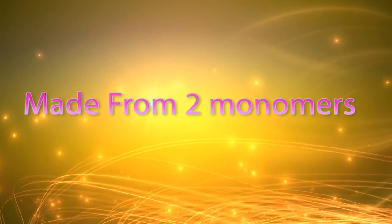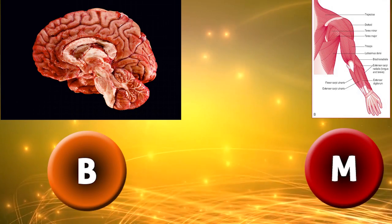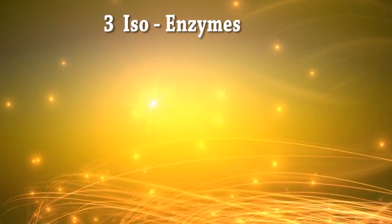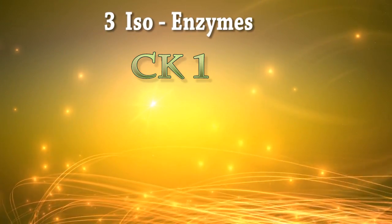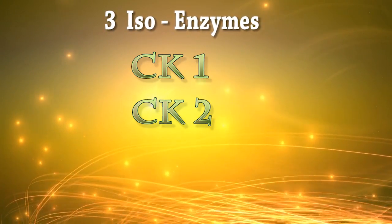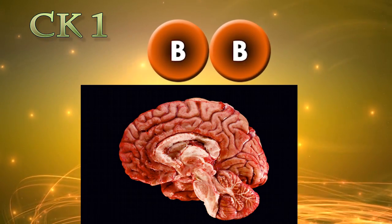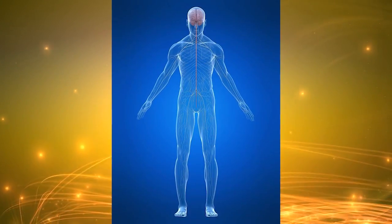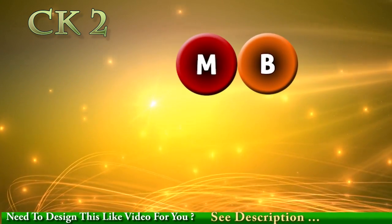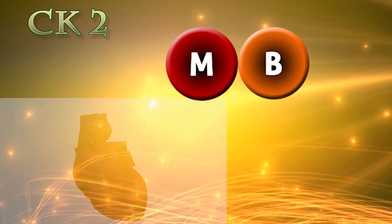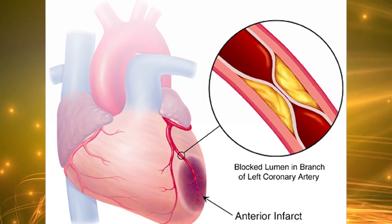Creatine kinase is a dimer made of two monomers. Skeletal muscle contains the M subunit and brain contains B subunits. We can see three isoenzymes for creatine kinase: CK1, CK2, and CK3. CK1 consists of two B subunits and is present in the brain, elevated in CNS diseases. CK2 consists of one B subunit and one M subunit, present in the myocardium and elevated in acute myocardial infarction.